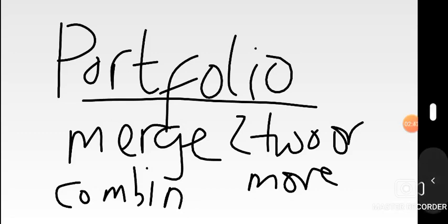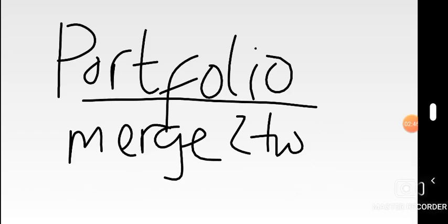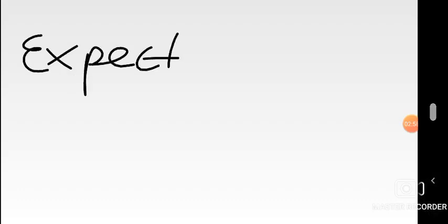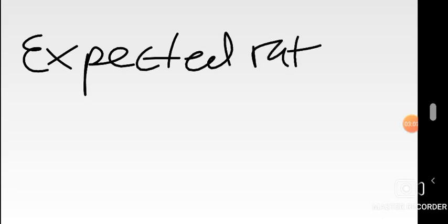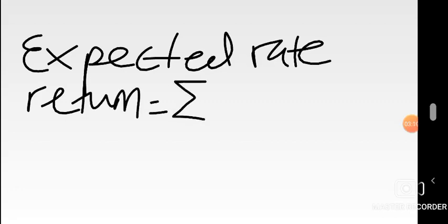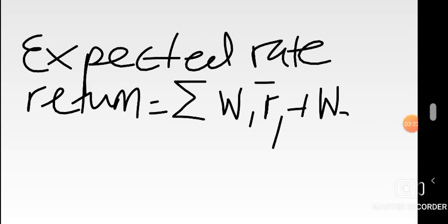So how do you calculate the expected return on a portfolio? The expected rate of return on a portfolio is equal to the summation of: the weight of the first asset times the expected return of that first asset, plus the weight of the second asset times the expected return on the second asset, and so on depending on the number of assets you're investing in. I've given a rough estimate here for just two assets.